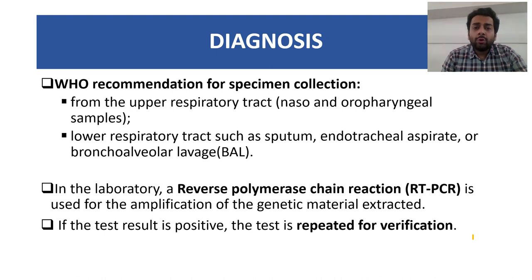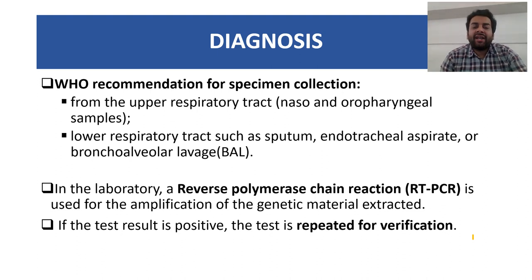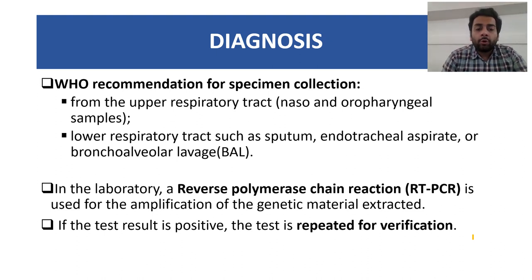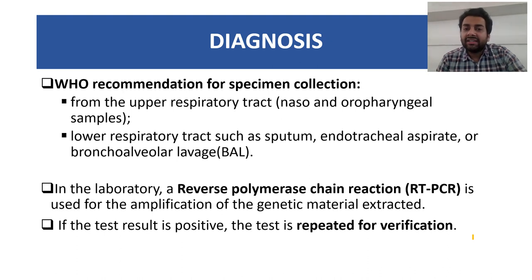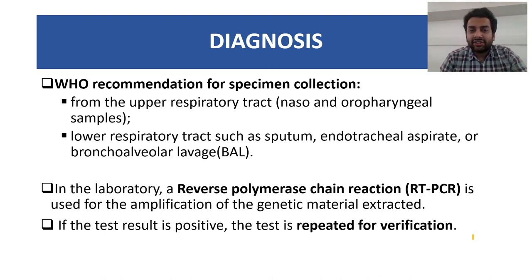Diagnosis. How do we diagnose this condition? The World Health Organization recommends collecting a nasopharyngeal or oropharyngeal swab from the upper respiratory tract. The lower respiratory tract can also be sampled via sputum, endotracheal aspirate, or bronchoalveolar lavage, usually when the patient cannot provide upper tract samples. In the laboratory, RT-PCR is carried out to amplify the genetic material extracted from the sample. If the test is positive, it should be repeated once more to confirm the diagnosis. Antibody-based testing kits are also now becoming available.